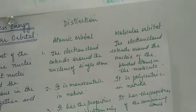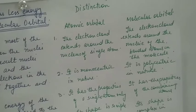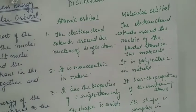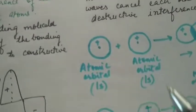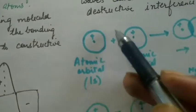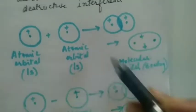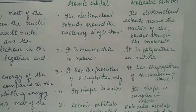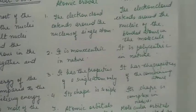The difference between atomic and molecular orbitals: In an atomic orbital, the electron cloud extends around the nucleus of a single atom. In a molecular orbital, the electron cloud extends around the nuclei of the bonded atoms in the molecule. The electron cloud is extended around only one nucleus in an atomic orbital, while in a molecular orbital it extends around both nuclei. An atomic orbital is monocentric in nature.